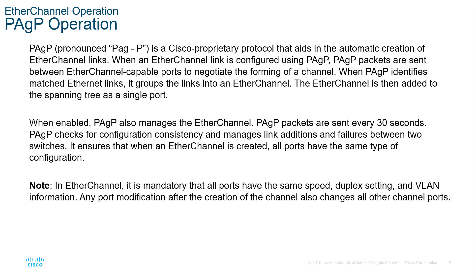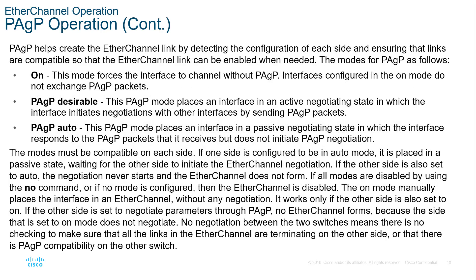PAGP is pronounced 'PAGP.' It is Cisco proprietary, meaning you can only use it on Cisco devices. When you enable PAGP, it manages the EtherChannel — packets are sent every 30 seconds to check for configuration consistency and manage link additions and failures. All ports must have the same speed, duplex settings, and VLAN information. Any port modification after creation of the channel also changes all ports that are part of that port group.